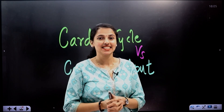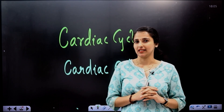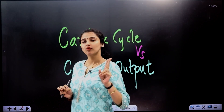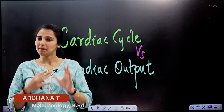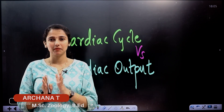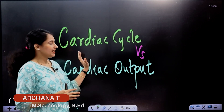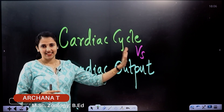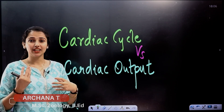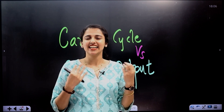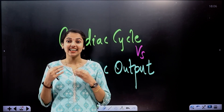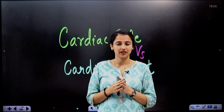In the chapter of body fluids and circulation, we have a two-mark question about the concepts of Cardiac Cycle and Cardiac Output. What is the Cardiac Cycle? What is the Cardiac Output?